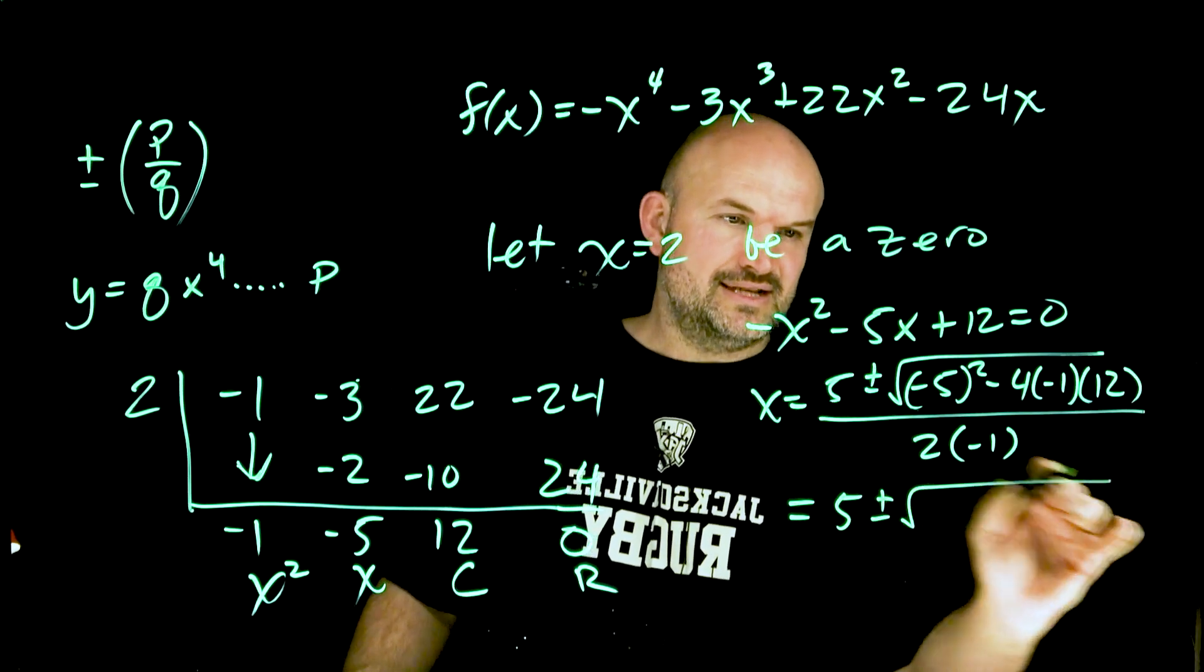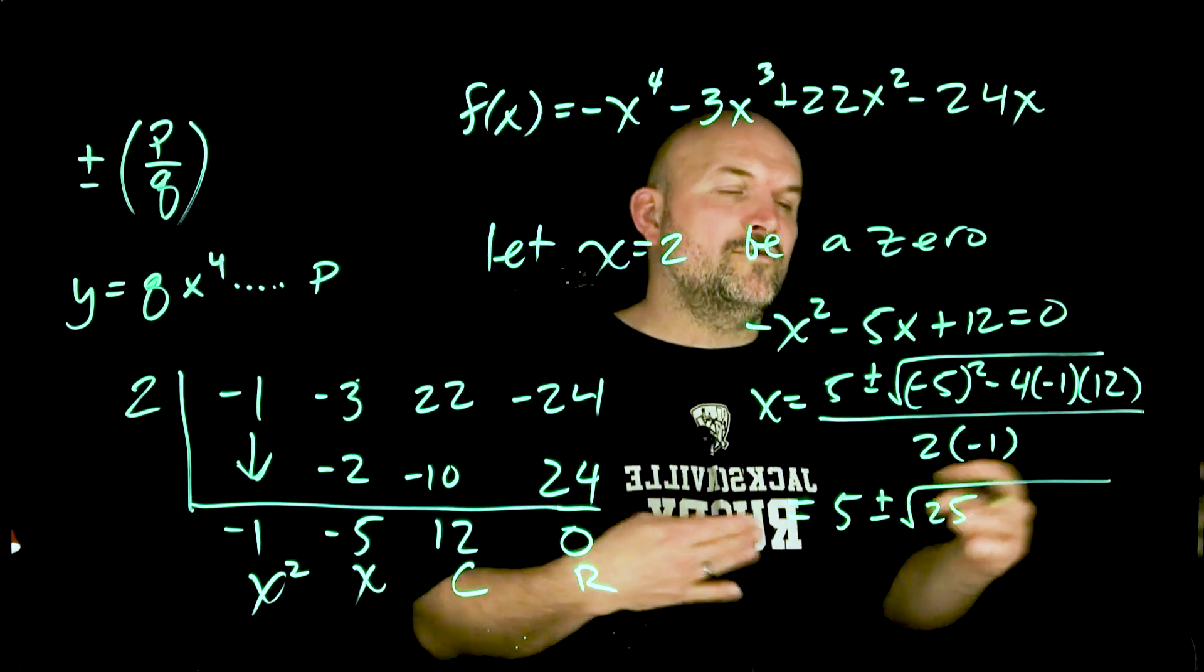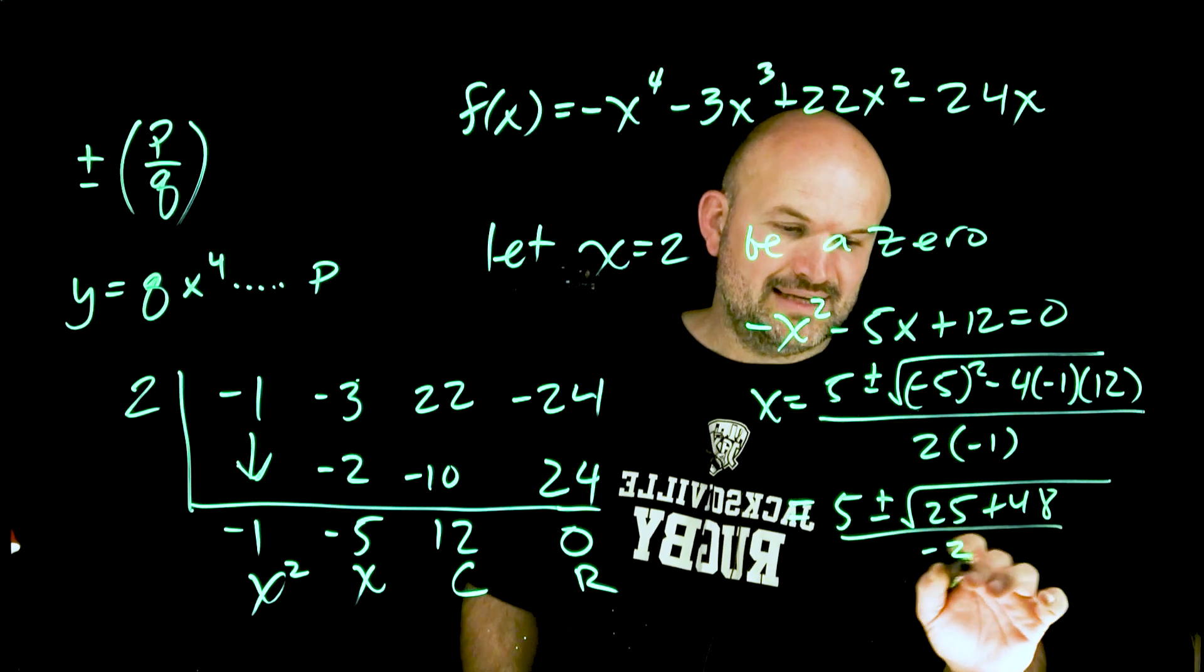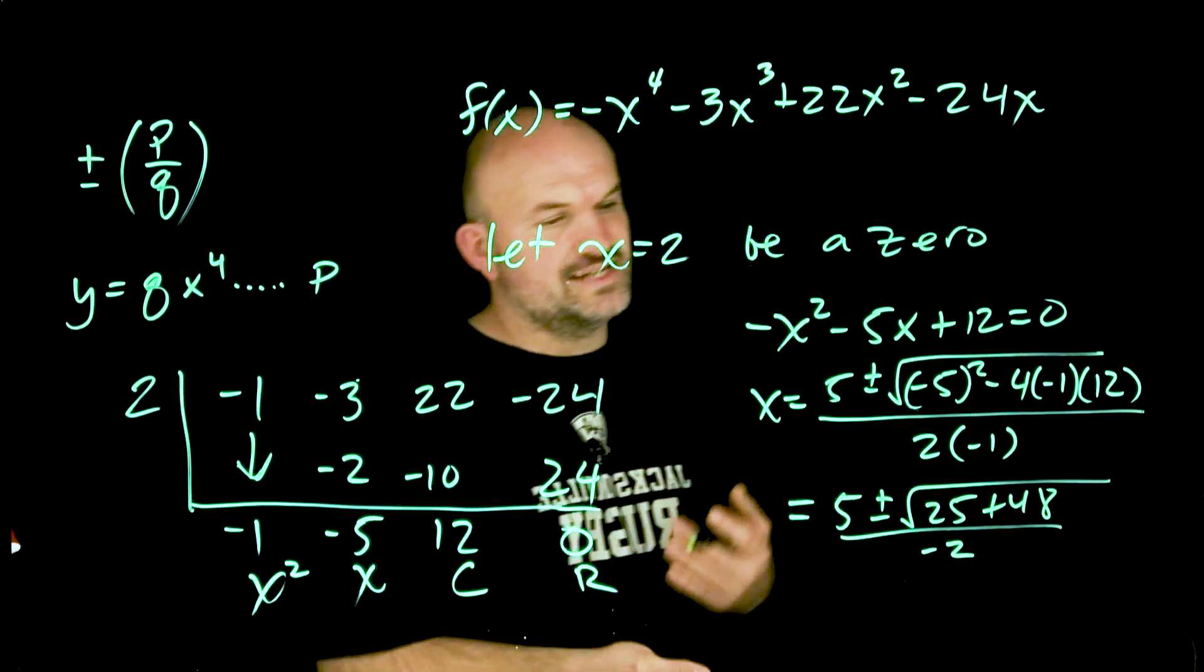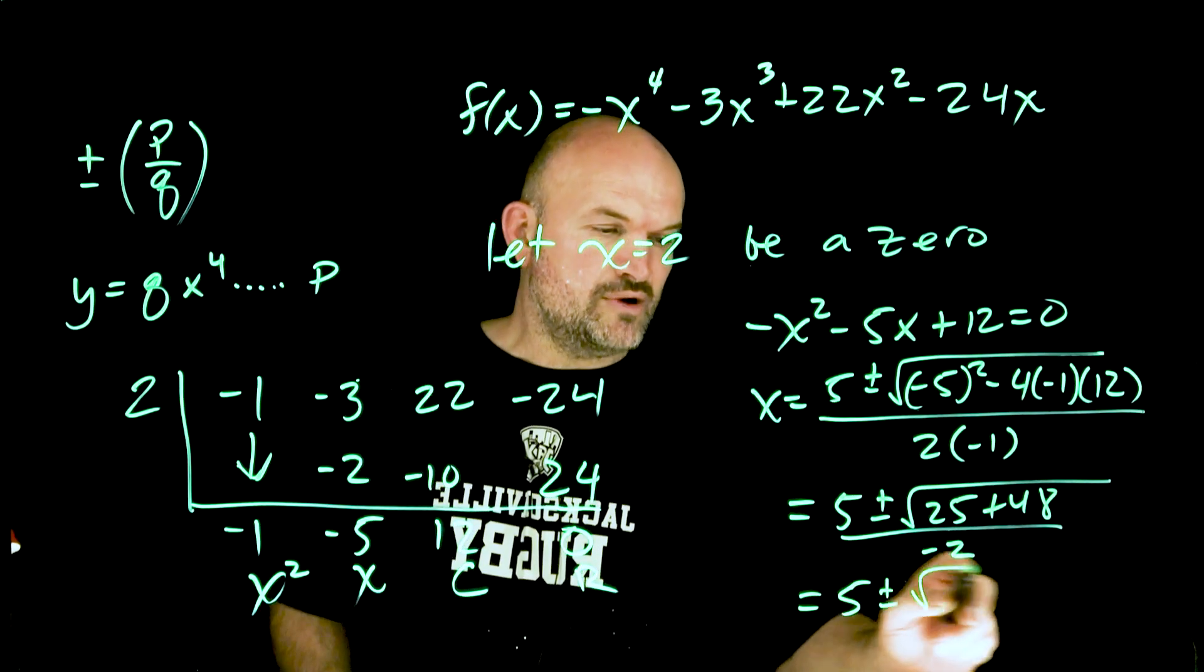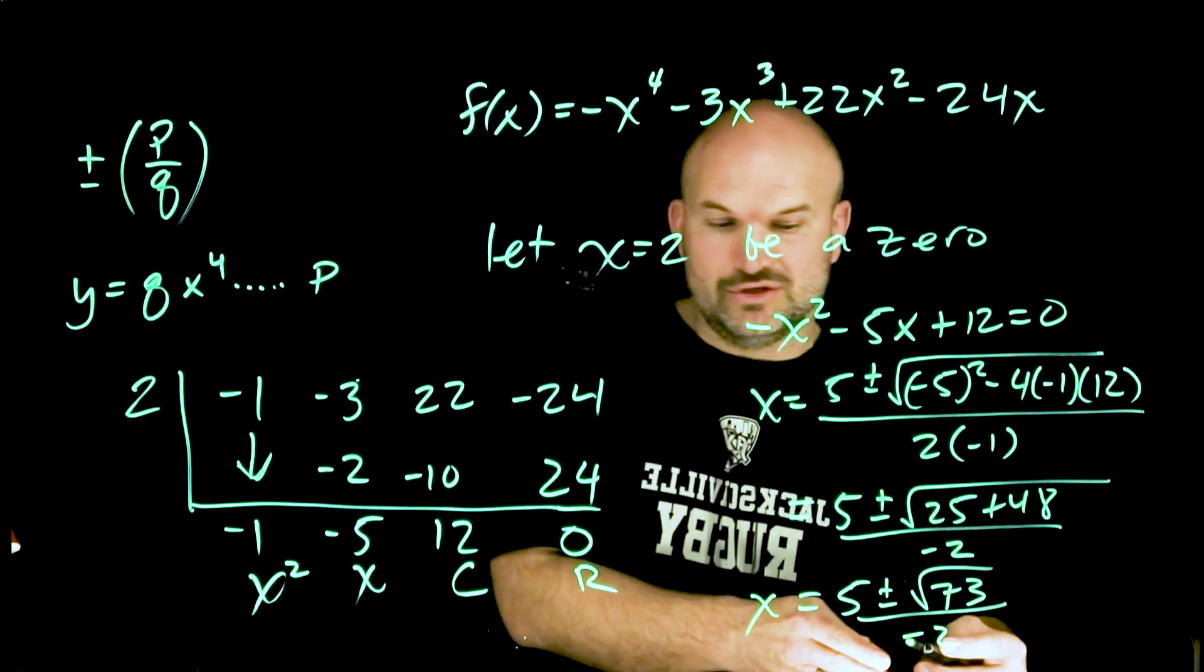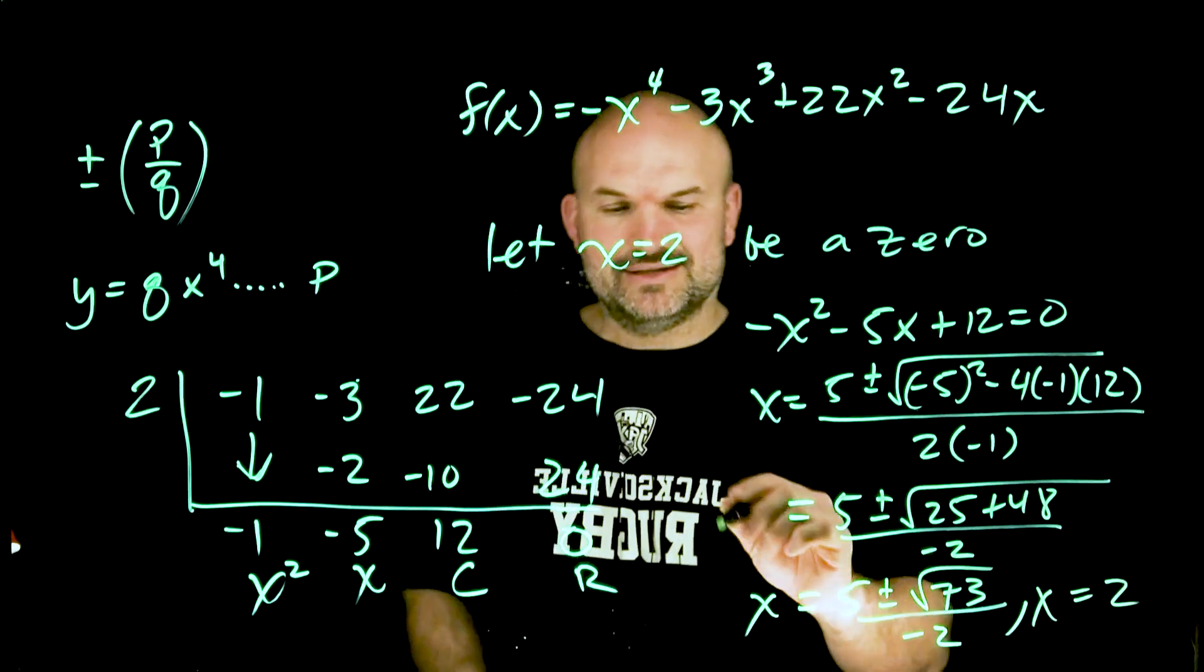Let's see, that's going to be 25. Negative 4 times negative 1 is positive 4, 4 times 12 is 48, divided by negative 2. 25 plus 48 is 73, so I have 5 plus or minus the square root of 73 divided by negative 2. So x equals those two solutions and x equals 2, that is all the remaining zeros.